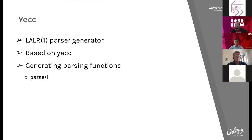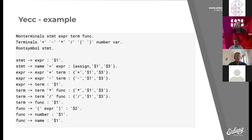For a parser generator we're going to use Yecc, which is the standard parser generator that comes with the OTP system. It's an LALR(1) parser based on Yacc and can handle the same type of grammars. When you build it you get one function back — parse — which takes a list of tokens and returns the forms you want to use.